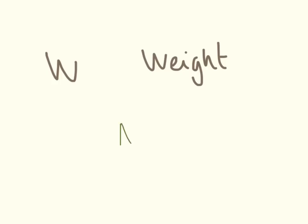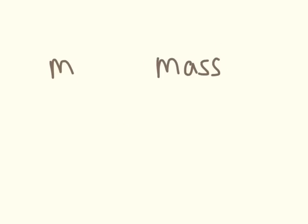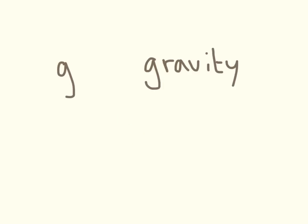One that always confuses people: weight is in newtons, because it is the force that you exert upon the earth. Mass — which is completely different to weight — is in kilograms. And gravity: they may or may not tell you the unit, so it is worth remembering it's 10 metres per kilogram.